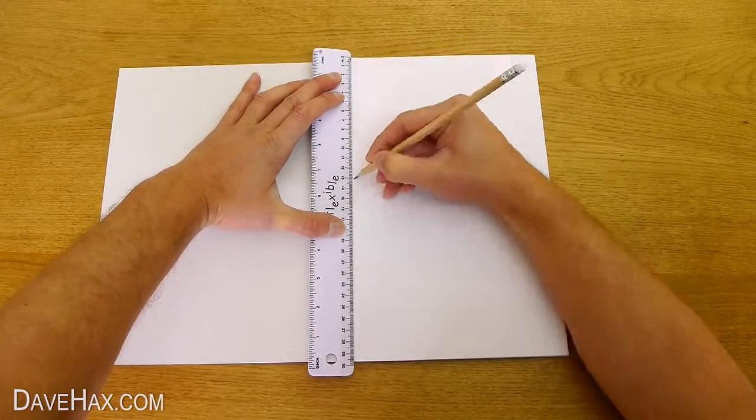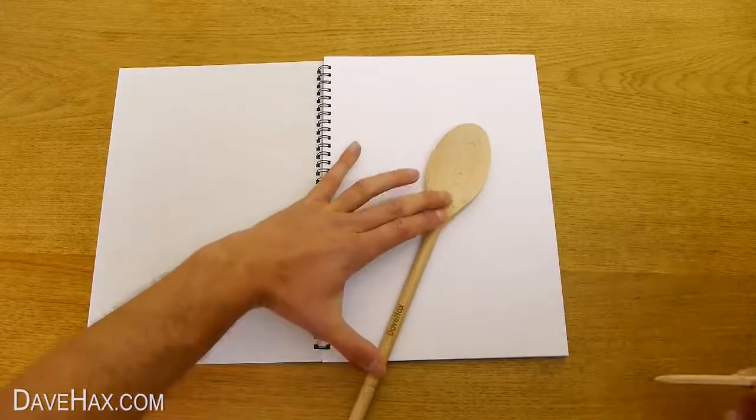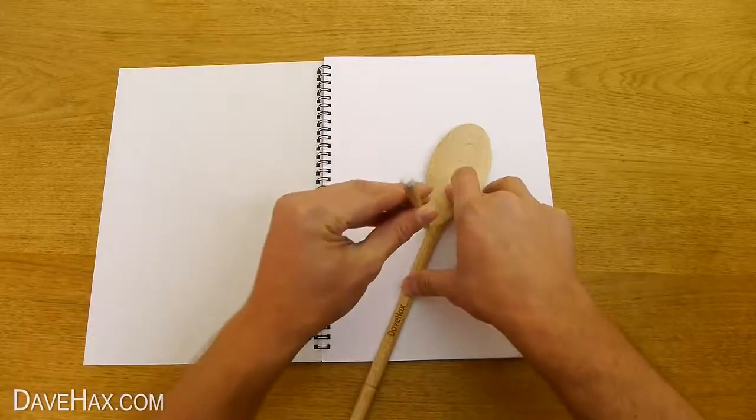When you're done, do the same down the other side. Next, I'm going to take a wooden spoon, place it on the paper, and using a pencil, carefully draw a line all the way around it.